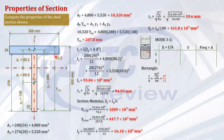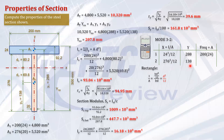For Area 1 (flange), x equals 24² over 12, y equals 288, and the frequency equals 200 times 24. For Area 2 (web), x equals 276² over 12, y equals 138, and the frequency equals 276 times 20. The table is straightforward to fill in. After inputting these values, the calculator stores them and these are the values you will see.